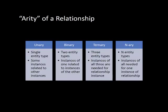Binary relationships have two entity types where instances of one are related to instances of the other. Then you may have ternary relationships, in which case there are three entity types, and a relationship connects all three of them simultaneously — whereas in the earlier cases it only connected two or one. And then this could go on — it could be an n-ary relationship where n entity types are involved.